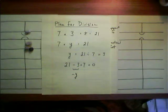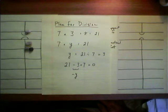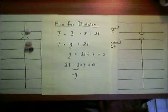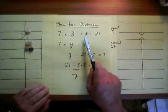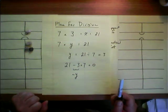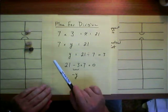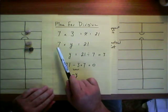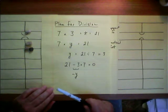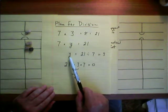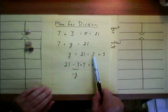Division is the opposite operation from multiplication, so our plan for division is to basically do the opposite that we did for multiplication. For instance, if we were multiplying 7 times 3 to get an answer, which in this case is 21, we could ask the opposite question: what times 7 equals 21, which is effectively 21 divided by 7.